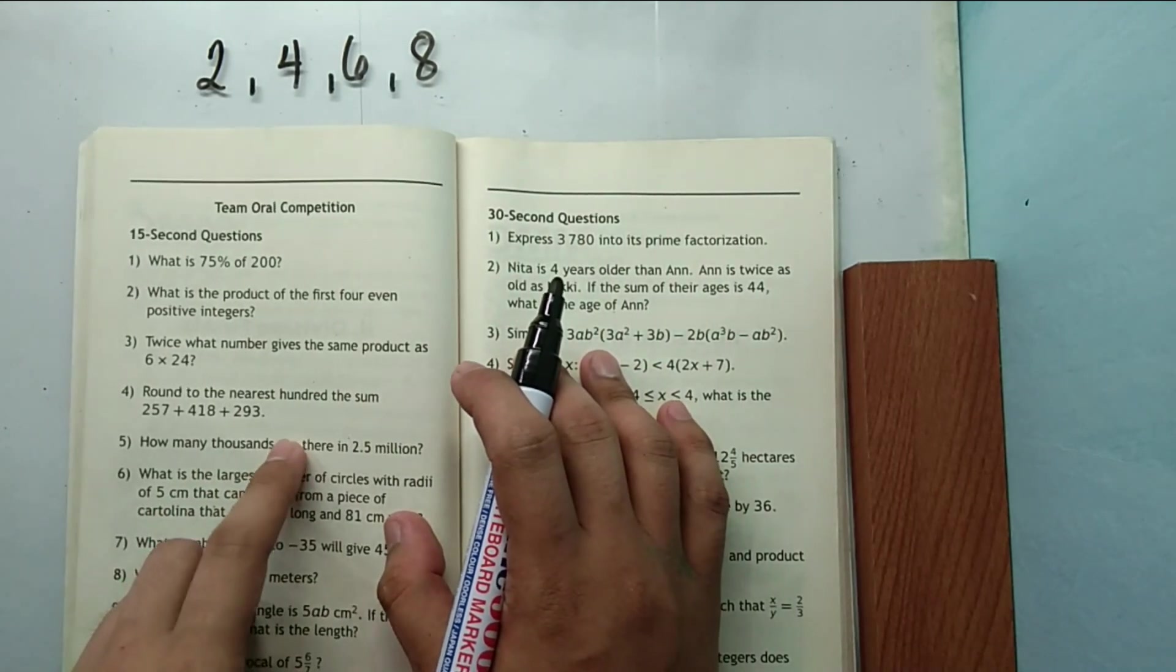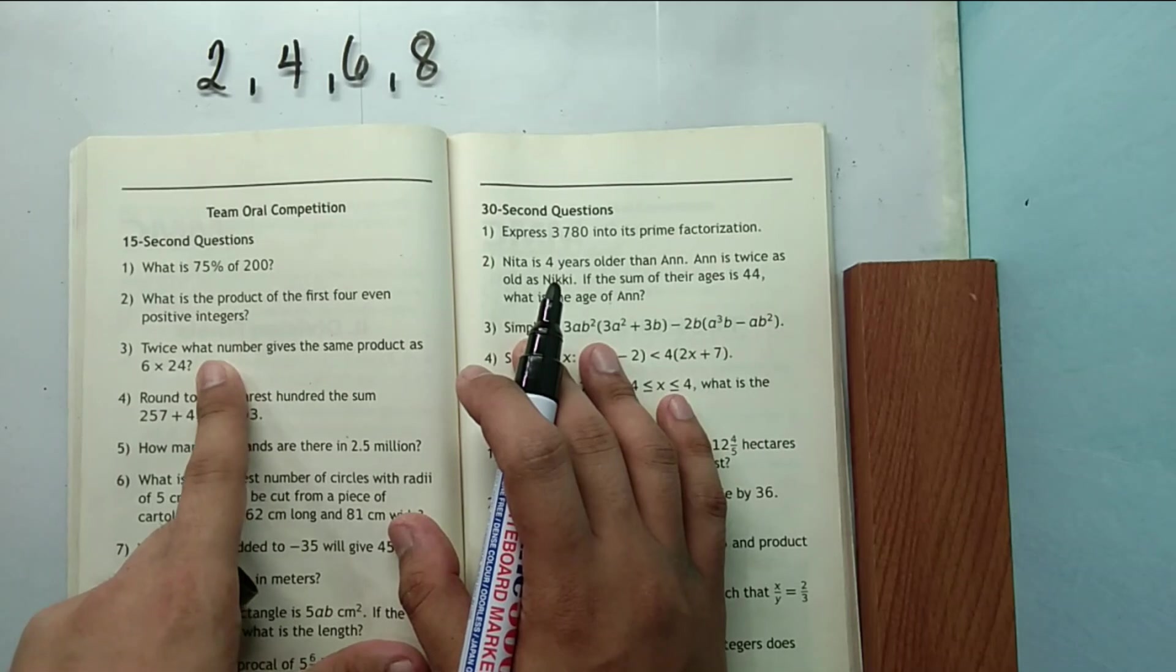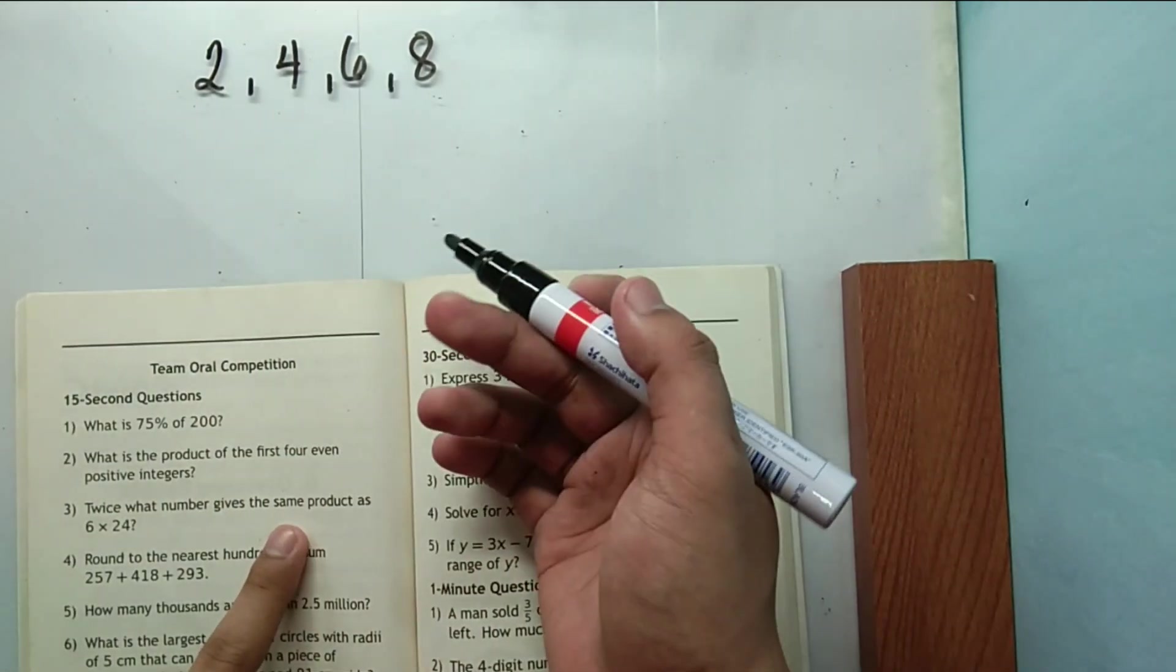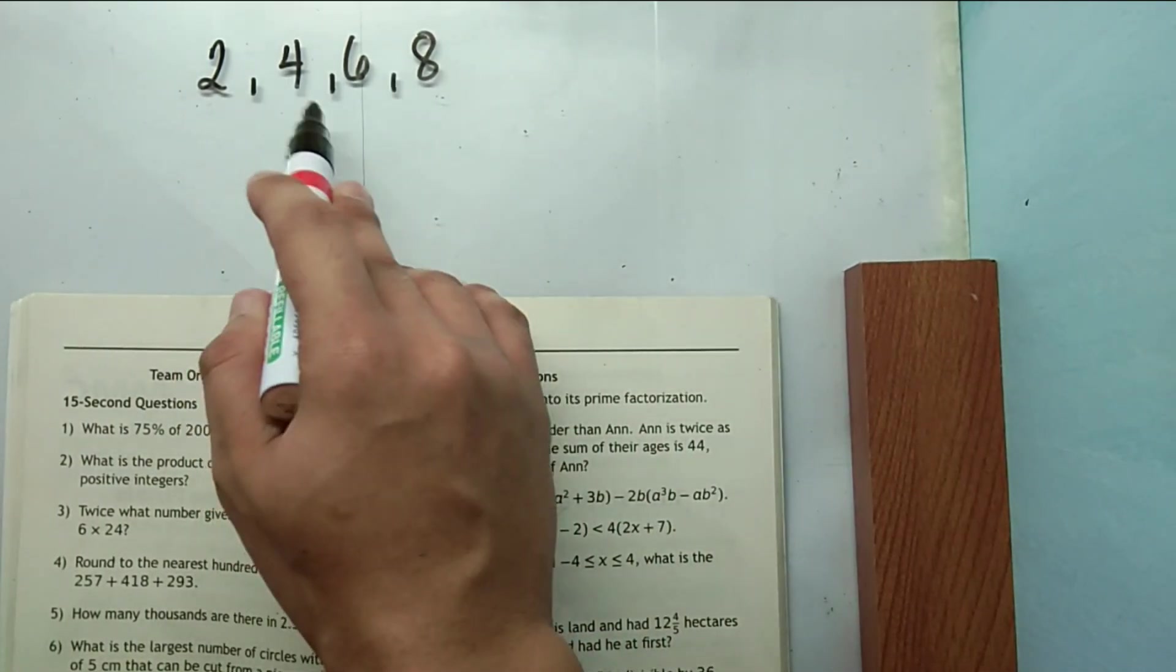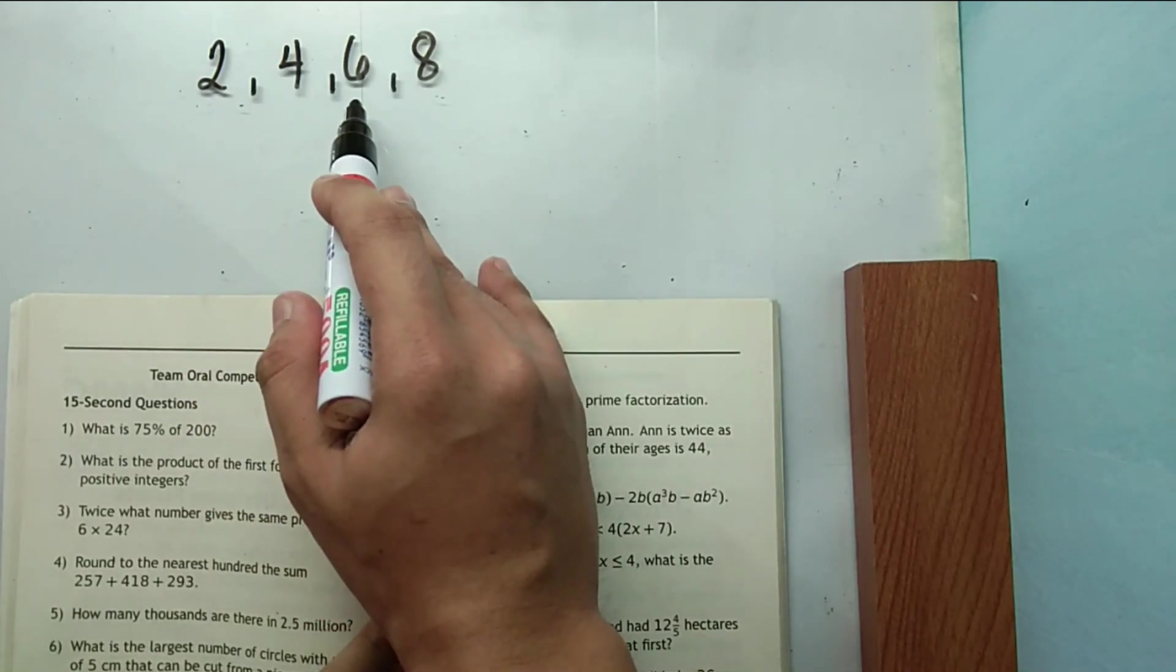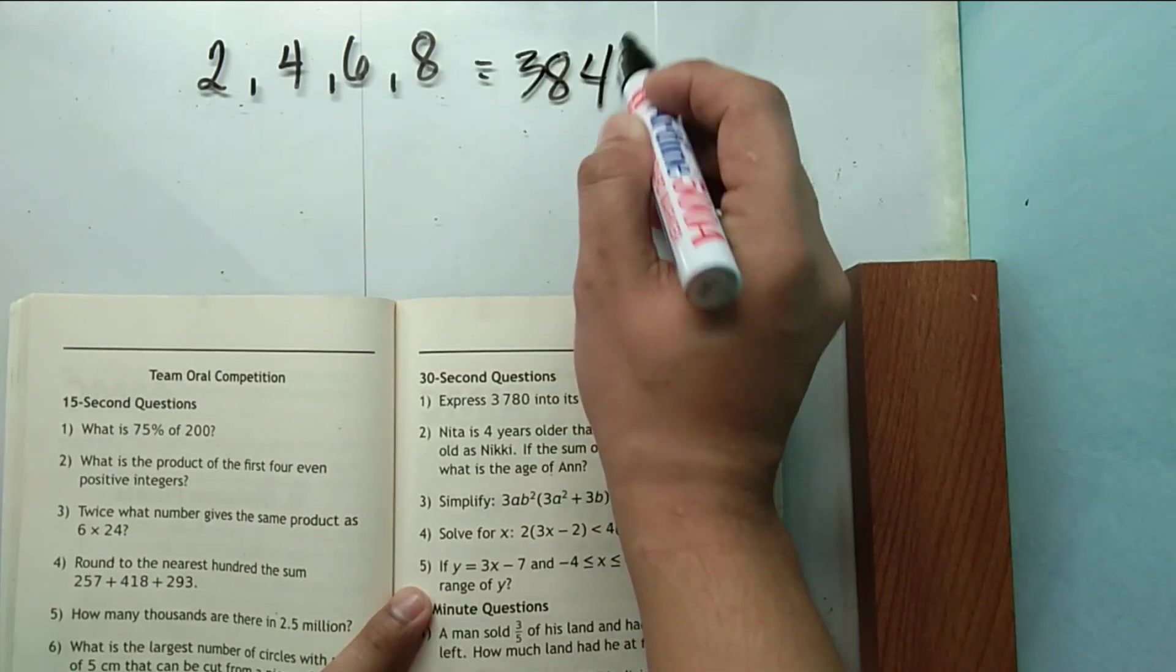Now there are three ways on how you could answer this question. First is by direct multiplication. If you are quite good in performing arithmetic, you will just directly multiply 2, 4, 6 and 8. So 2 times 4 is 8 times 6, that's 48 times 8, that's 384.